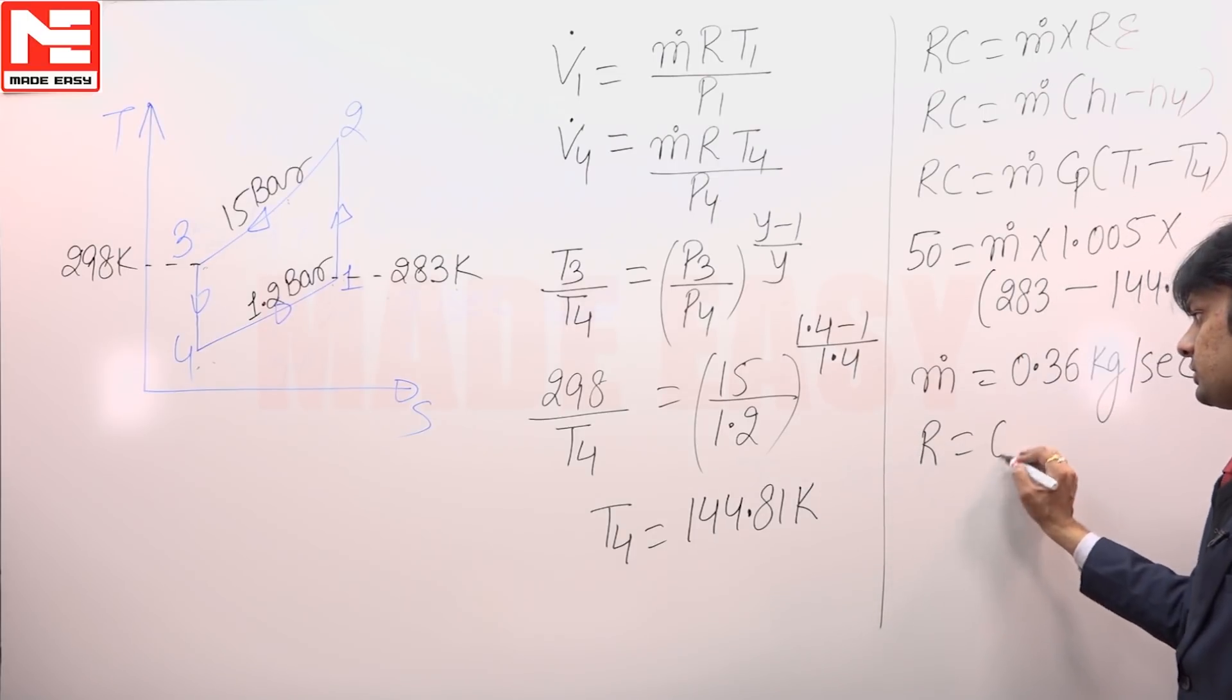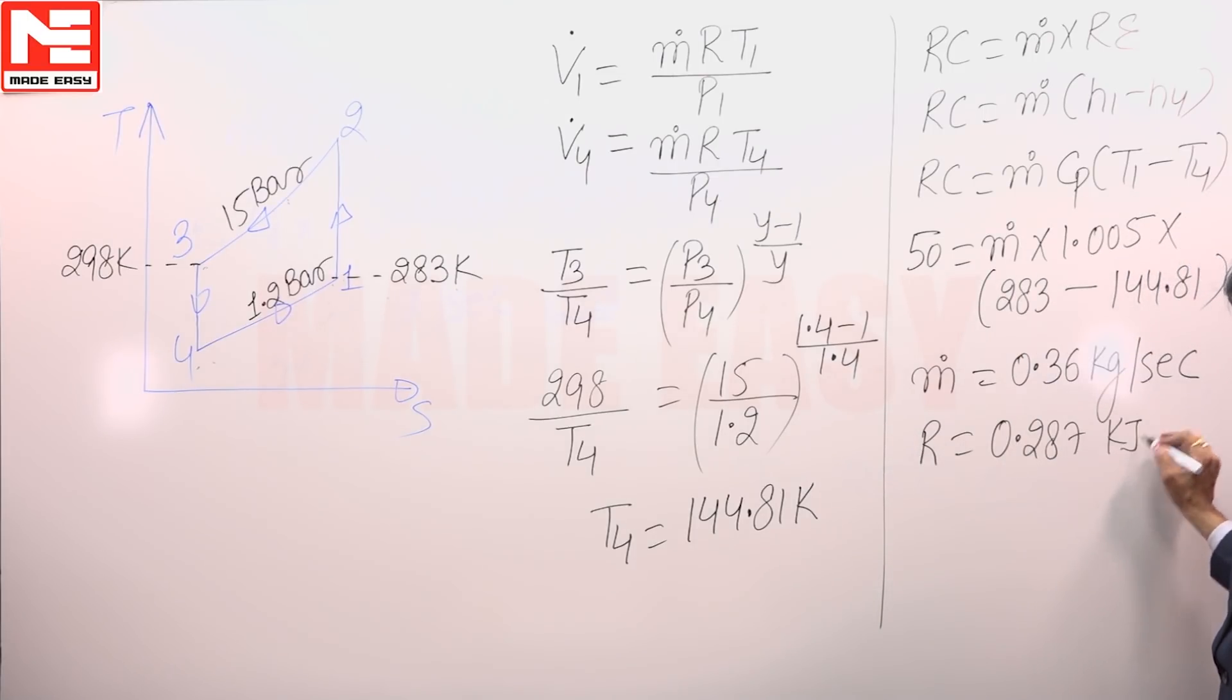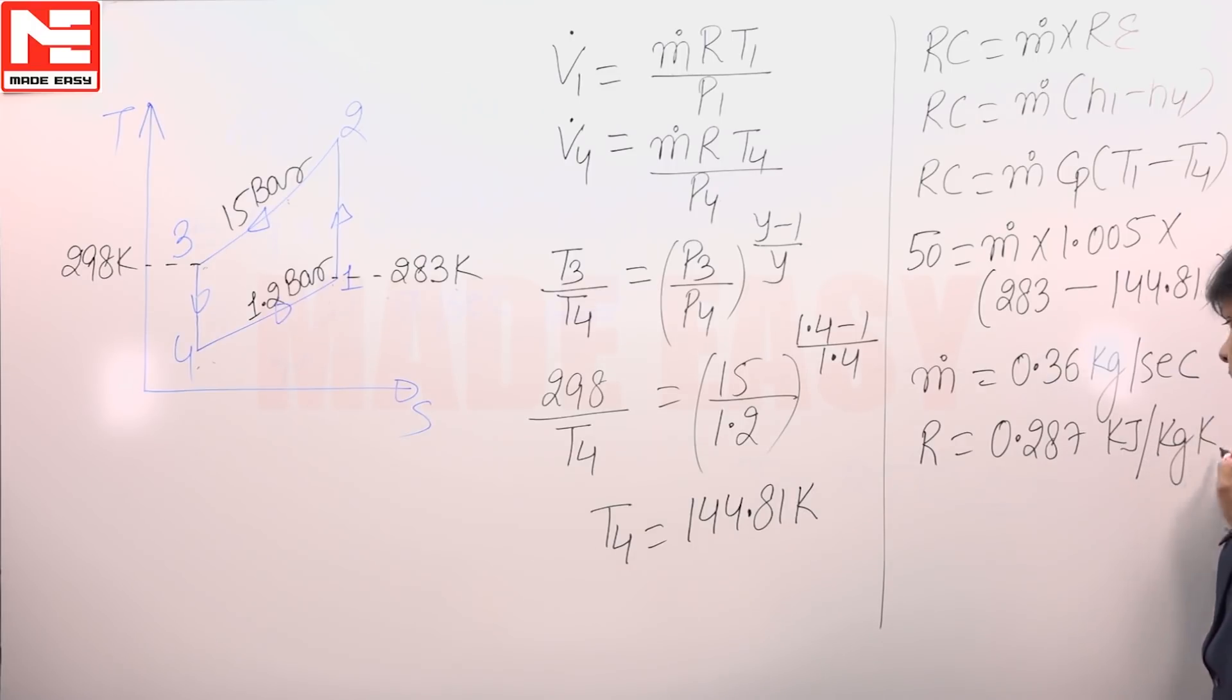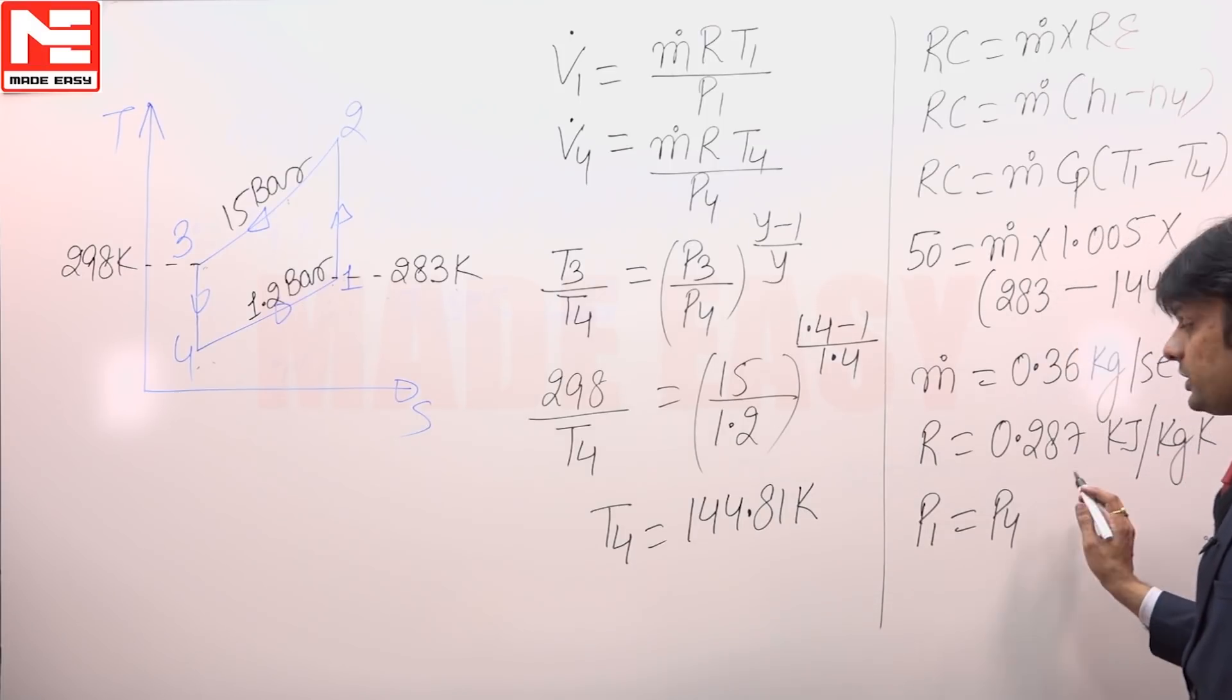The value of R is 0.287 kilojoule per kg Kelvin, and the value of pressure P1 and P4 are the constant pressure process, so 1.2 bar.